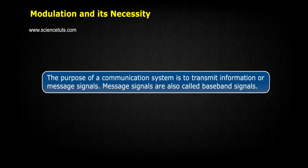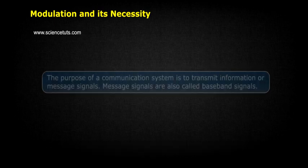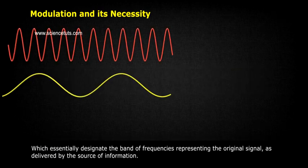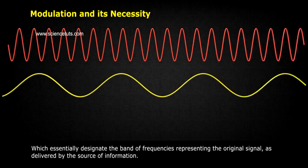Modulation and its Necessity. The purpose of a communication system is to transmit information or message signals. Message signals are also called baseband signals which essentially designate the band of frequencies representing the original signal as delivered by the source of information.